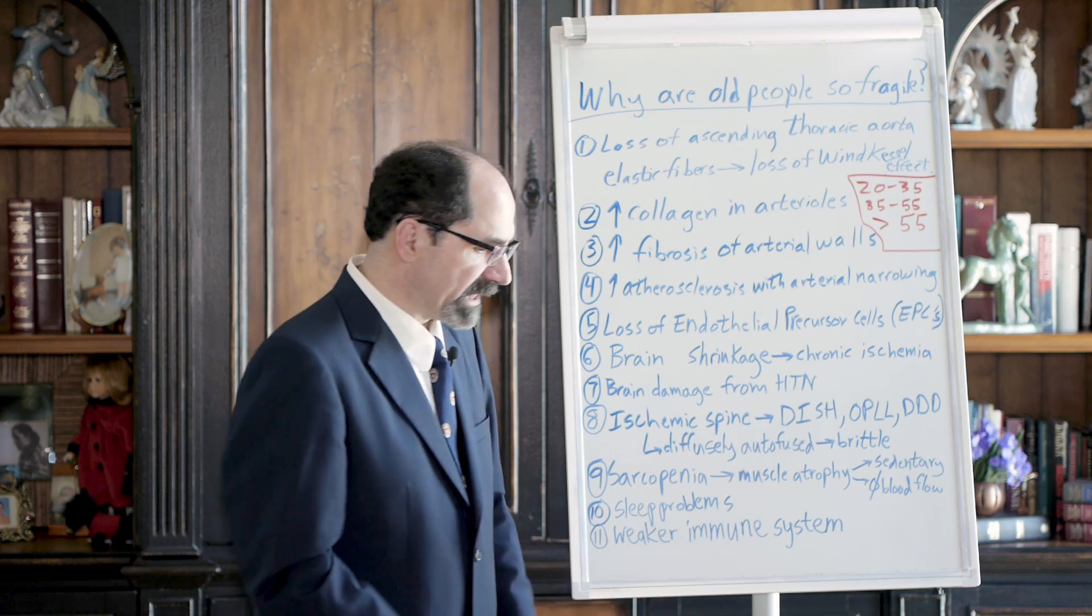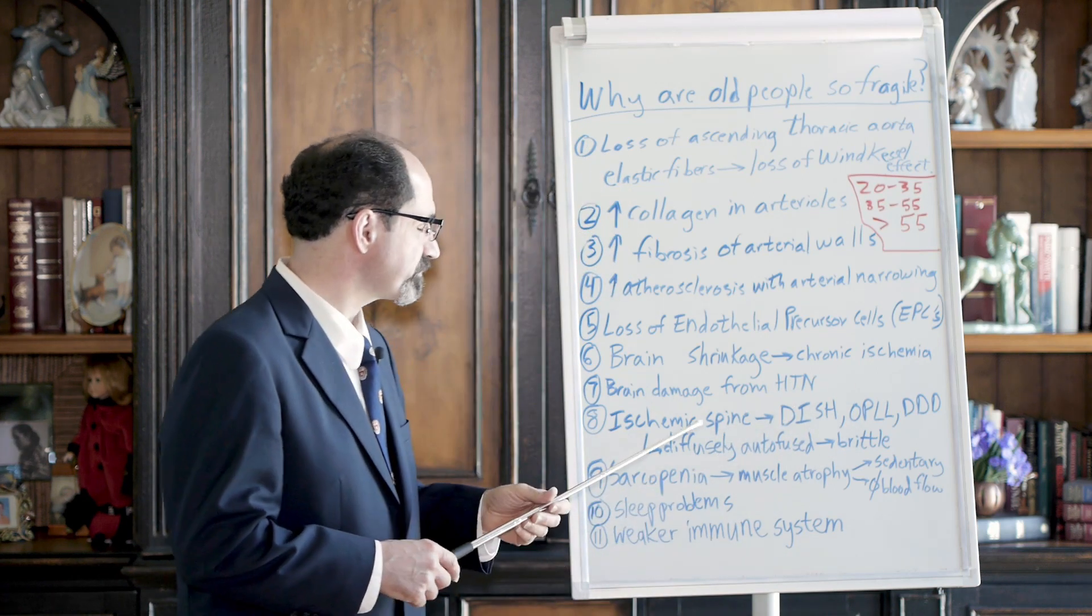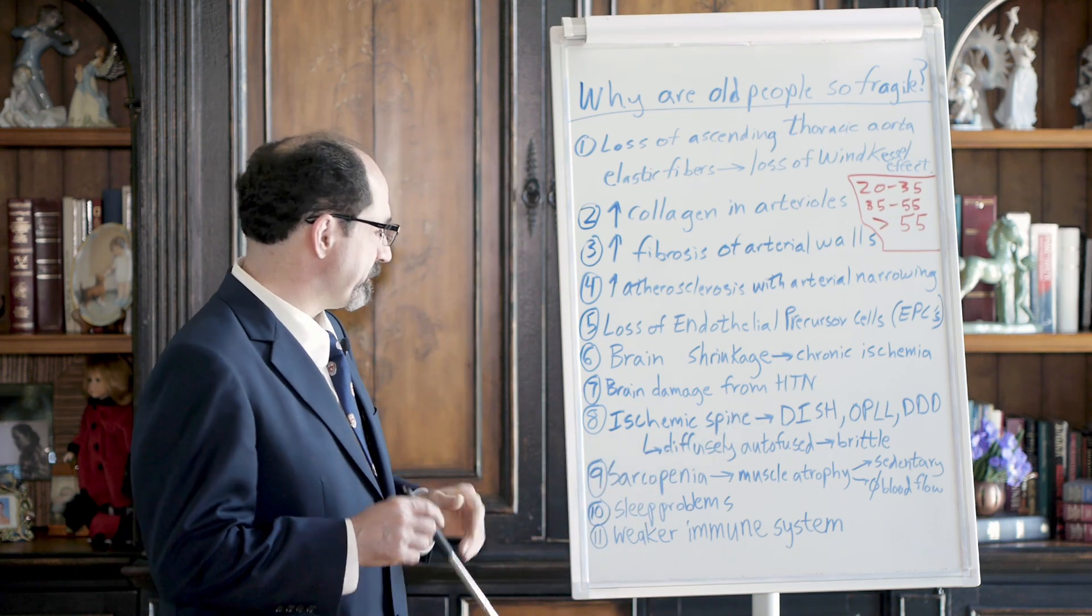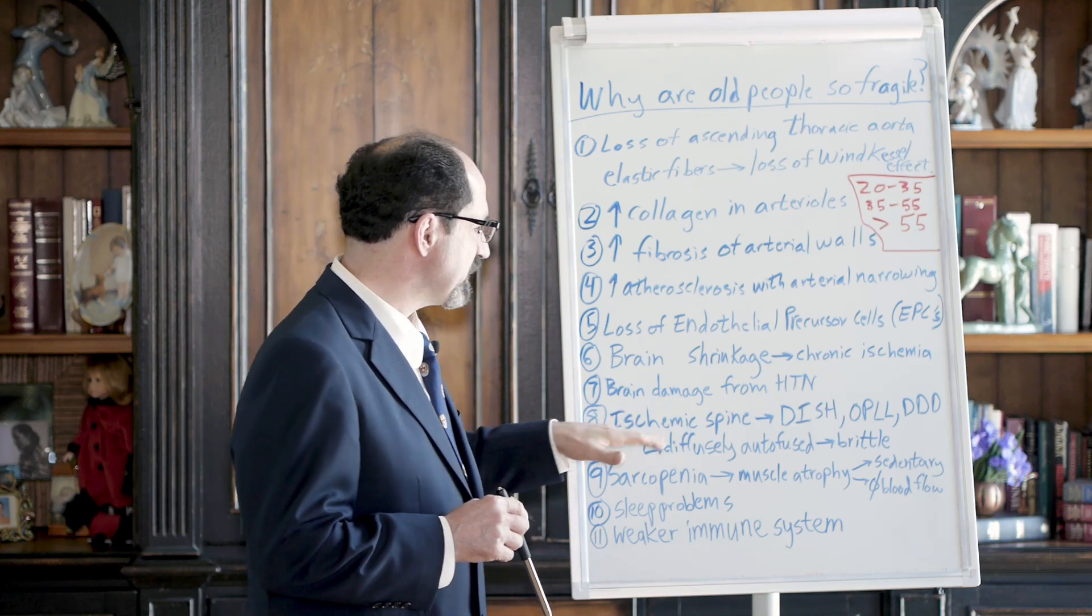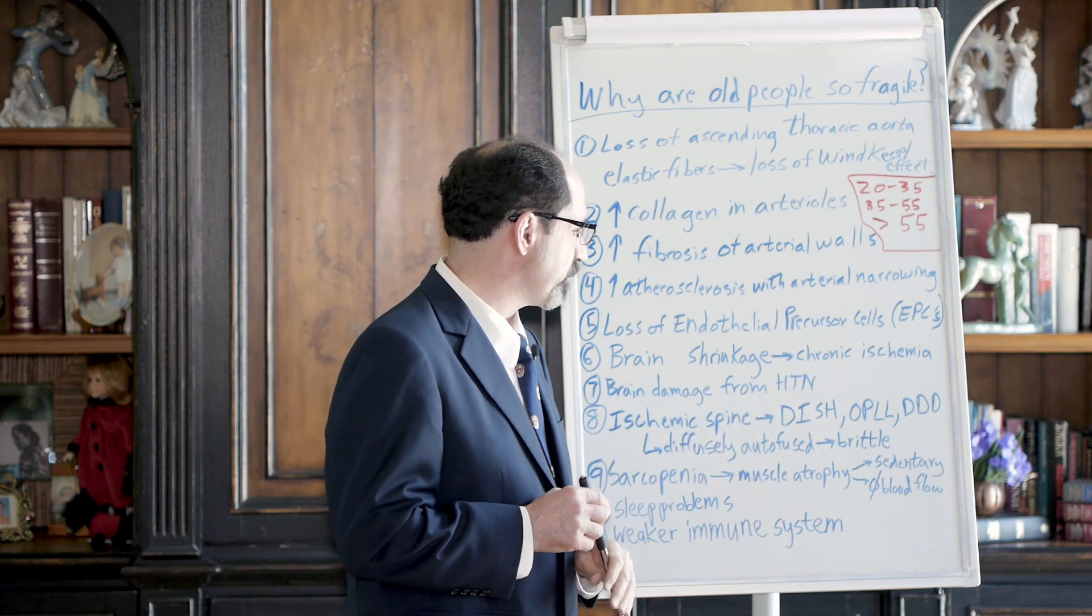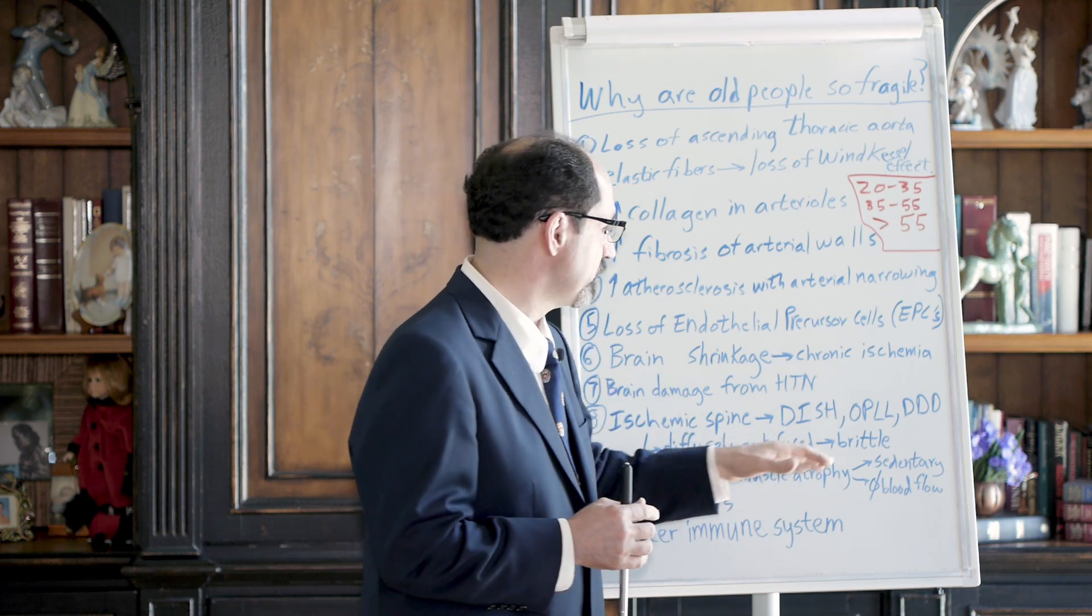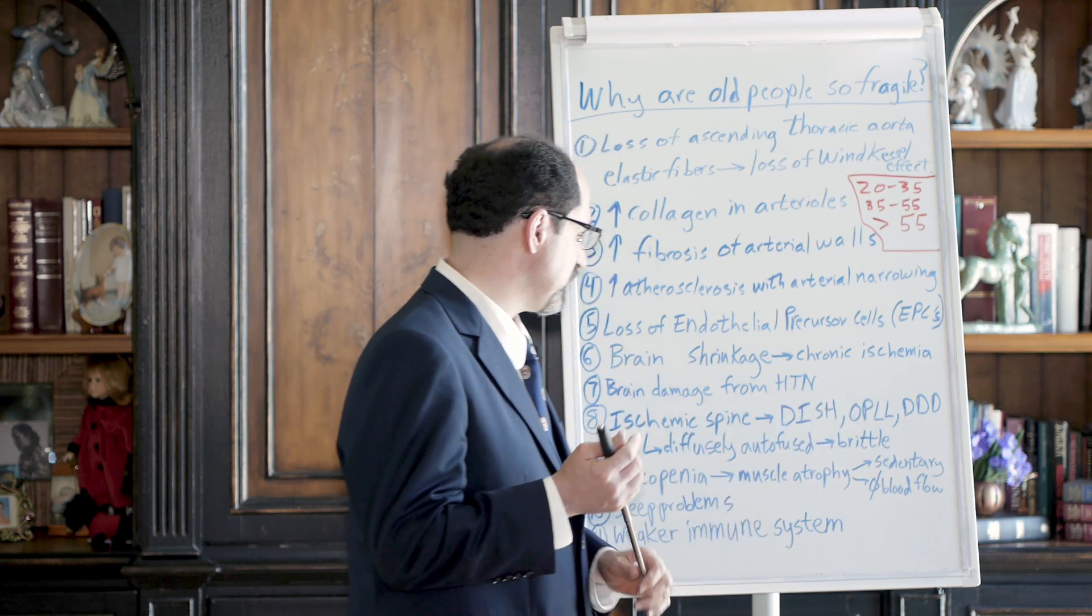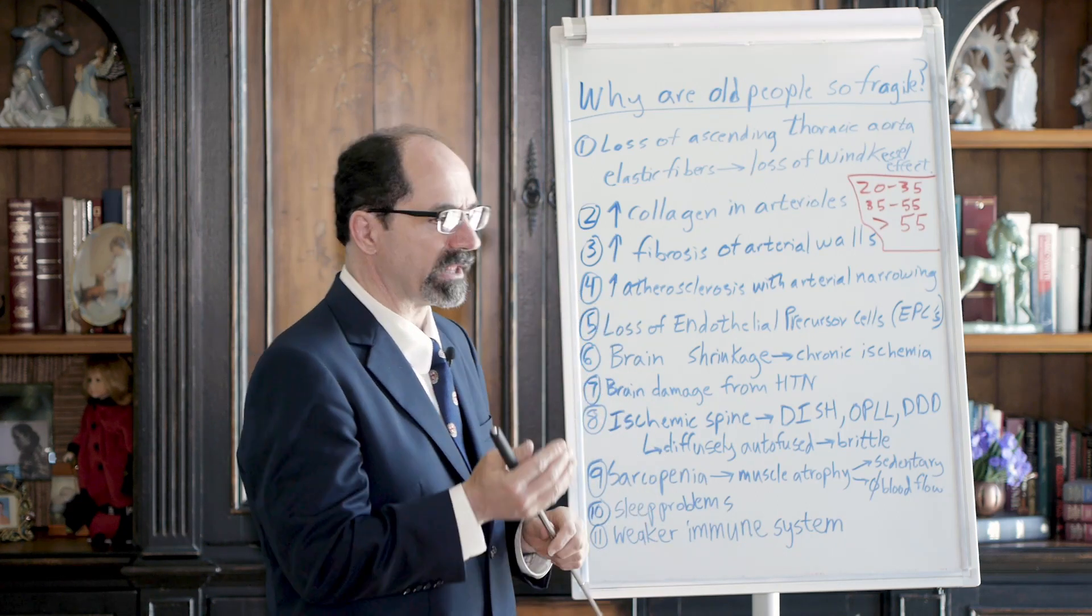What about their spine? You see a lot of old people walking kind of hesitantly in a walker. Typically it's because they've got a lack of blood supply to their spine. That's called ischemic spine. DISH means diffuse idiopathic skeletal hyperostosis. They get bridging osteophytes, it's due to failure of the disc from ischemia. Ossification of the posterior longitudinal ligament. DDD is degenerative disc disease. The spine ends up fused vertebrae to vertebrae at every level.